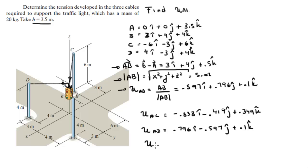The last unit vector you need to find is the one holding the weight of the light, which goes straight down in the K axis, giving a unit vector of -1k.